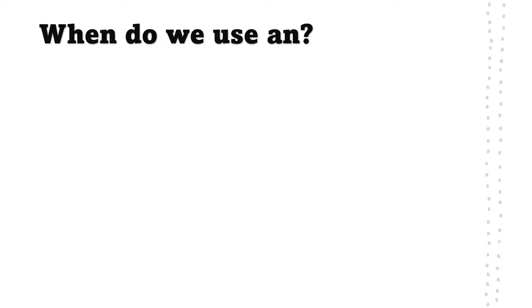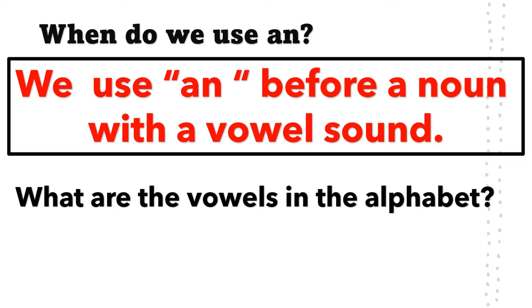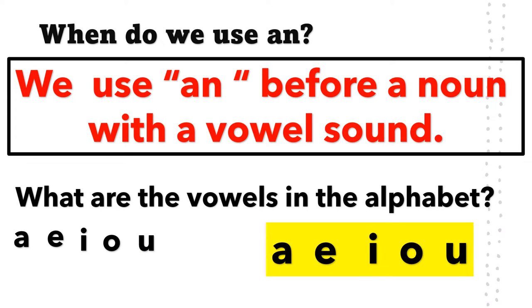When do we use AN? We use AN before a noun with a vowel sound. What are the vowel letters in the alphabet? These are A, E, I, O, U. The sounds of these are A, E, I, O, U.